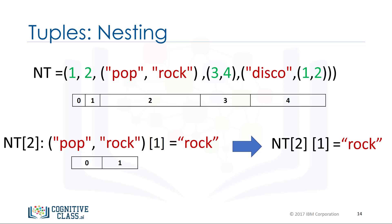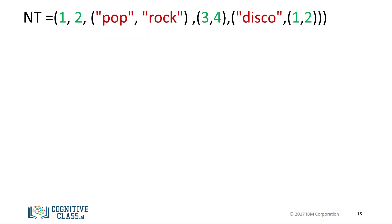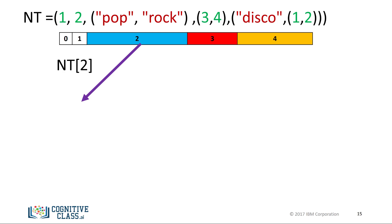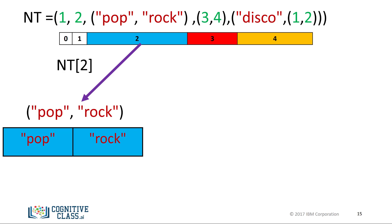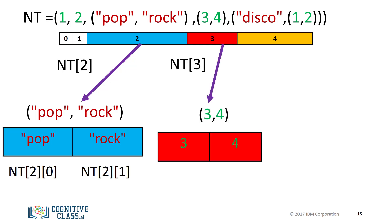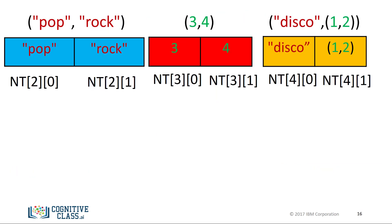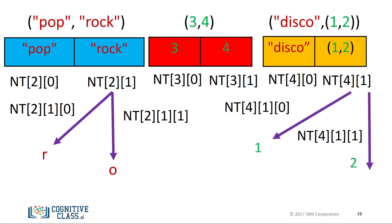It is helpful to visualize nesting as a tree. The tuple has the following indexes. If we consider indexes with other tuples, we see the tuple at index two contains a tuple with two elements. We can access those two indexes. The same convention applies to index three. We can even access deeper levels of the tree by adding another square bracket to access different characters in the string or various elements in the second tuple contained in the first.